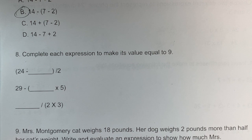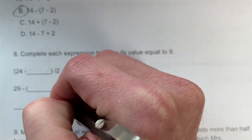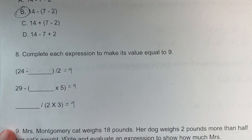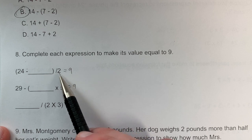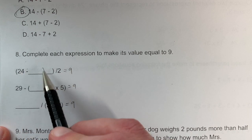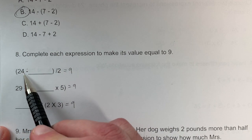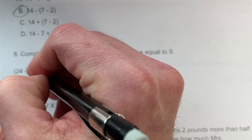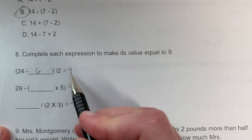Problem 8a: Complete each expression to equal 9. Using inverse operations: since we're dividing by 2, I multiply 9 × 2 = 18. The numerator needs to be 18 because 18 ÷ 2 = 9. So 24 - 6 = 18, meaning 6 goes in the blank: (24 - 6) ÷ 2 = 9.